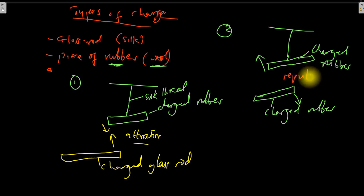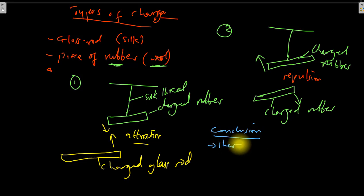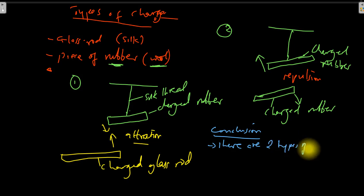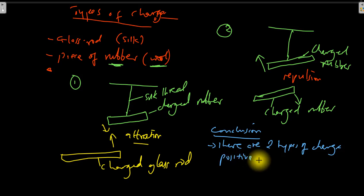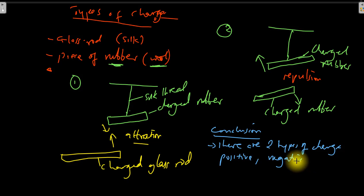This is a very important experiment because it gives us two conclusions. The first conclusion is that there are two types of charge. By convention, the charge on the glass rod is positive charge, and the charge on the piece of rubber is negative charge. This convention was brought by Benjamin Franklin in the 18th century and later proved using atomic theory.